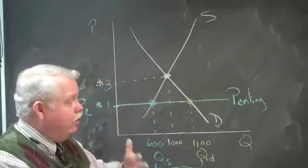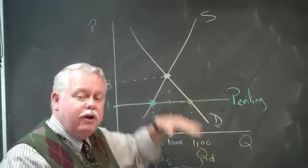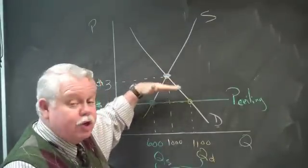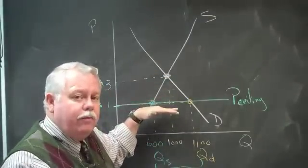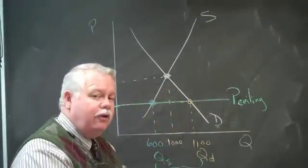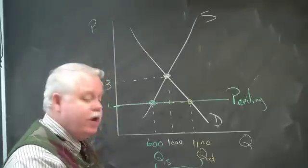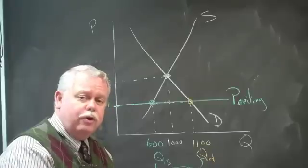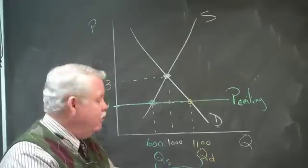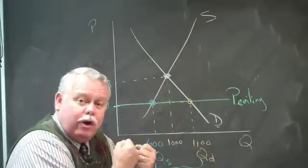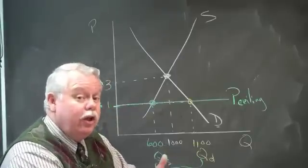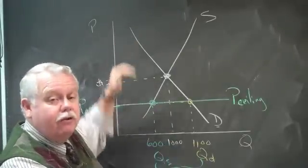So, many times when outside agencies come in and try to hold prices artificially low, below their equilibrium, the result is not to improve the situation but to create shortages and often, as a result of the shortages, a black market. People buy a lot of this stuff, they hoard it, and then they sell it illegally at maybe $4 and $5 a gallon.